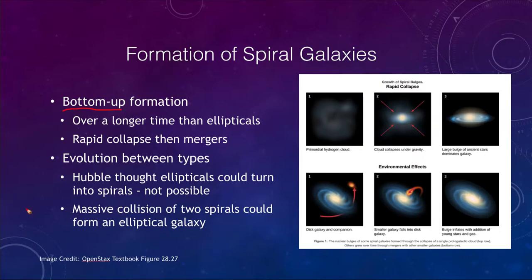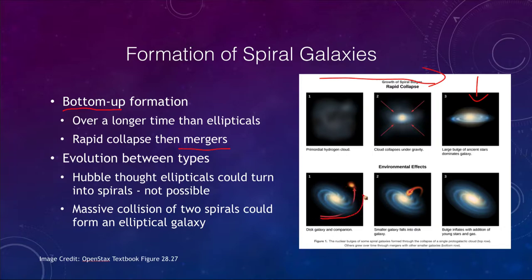Now let's look at spiral galaxies. We can look at bottom-up formation — they formed over a longer time period and then had a rapid collapse. Looking at steps one through three, we had a hydrogen cloud collapsing under gravity and forming a basic spiral galaxy. But then there were mergers: a small galaxy orbiting around would eventually become engulfed, changing the size of the bulge and altering the galaxy.